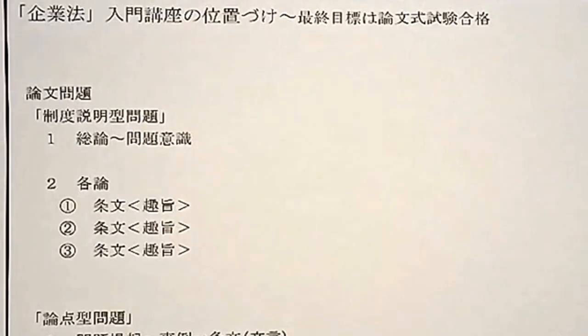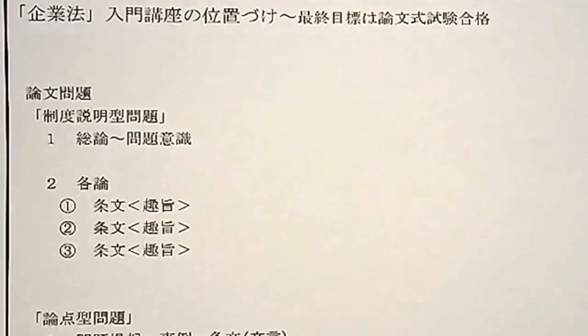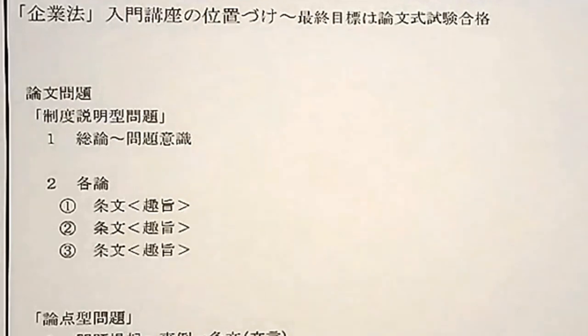極端な話、入門期は企業法をやらなくても大丈夫です。企業法は量も暗記も多いですが、入門期は計算科目が優先です。入門講座は全8回で、フォーサイトの第一分冊（総論・設立・株式・機関）を扱います。これが論文でも担当でも最もよく出るところです。